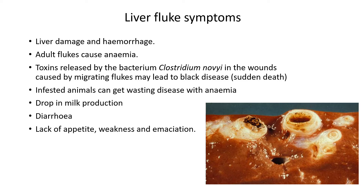Infested animals can get wasting disease accompanied by anemia — anemia is evident when wounds do not heal. Wasting disease is when animals become completely emaciated: very skinny, losing weight and muscle mass with the rib cage visible. A drop in milk production, as well as reduced meat production, is also noted. Diarrhea is common as the body tries to expel the parasite, along with lack of appetite and weakness. A gross image shows the large lesions left by flukes and wasted liver tissue.